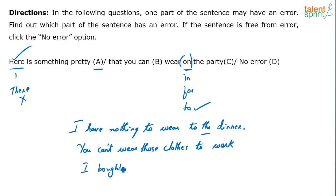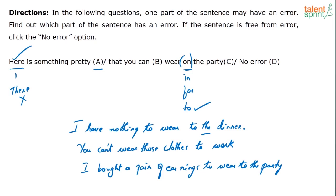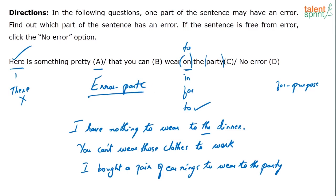Let's use 'to the party' only. 'I bought a pair of earrings to wear to the party.' Usually, when you're looking at going somewhere, you're going to be wearing that and going to that place. Whenever there's movement involved, try and stick to 'to.' 'For' always brings in purpose. Here, it's only talking about the event and that you'll be going there. The purpose is not very clear. So depending on what you're trying to convey, prepositions will vary. 'I have nothing to wear for lunch. I have nothing to wear for dinner.' So the error is in Part C.